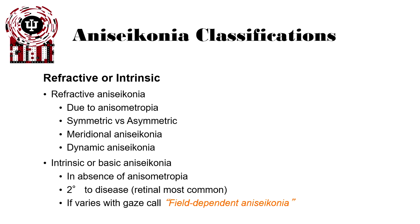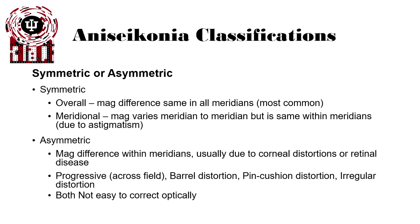There are a number of anisoconia classifications: refractive or intrinsic. Refractive anisoconia is due to anisometropia and can be symmetrical or asymmetrical, meridional, or dynamic. Intrinsic or basic anisoconia occurs in the absence of anisometropia and is typically secondary to disease — often retinal disease specifically — and can sometimes vary with gaze, called field-dependent anisoconia. Symmetric anisoconia is when the overall magnification difference is the same in all meridians and is by far the most common. Meridional asymmetry is when magnification varies meridian to meridian — this is due to astigmatism.